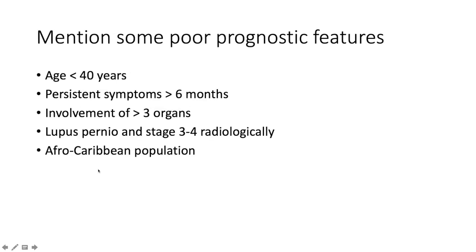Death can also result from pulmonary fibrosis, cor pulmonale, or renal damage. Poor prognostic features include: age under 40 and persistent symptoms for over six months or chronicity of symptoms.